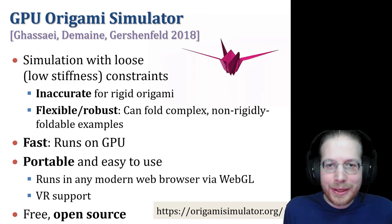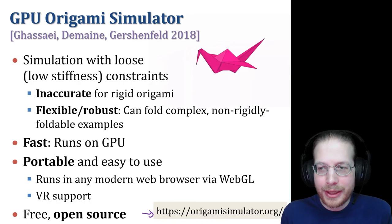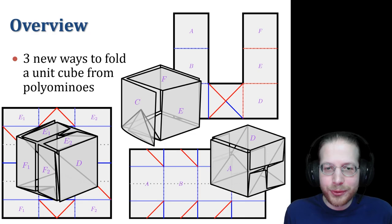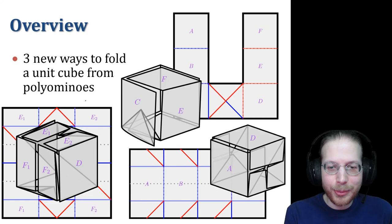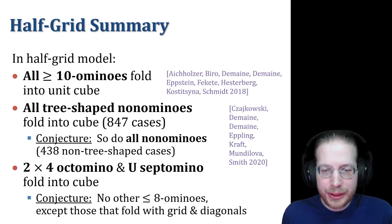If you want to make your own animations like this, here's a pointer to Origami Simulator. Go to origamisimulator.org, and you can draw these diagrams in your favorite drawing program, and then import them. Just to summarize again, these are the three new ways to fold a cube from polyominoes using the half grid model. We already knew that a smaller than 3x3 square folded into a cube, but that required 45 degree rotation. Now we have a way to do it without the rotation on the half grid.